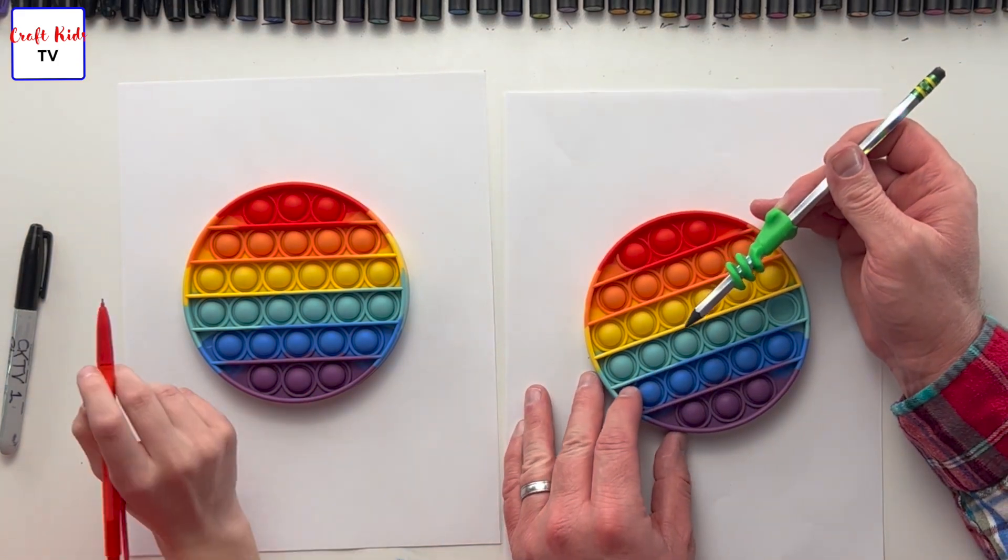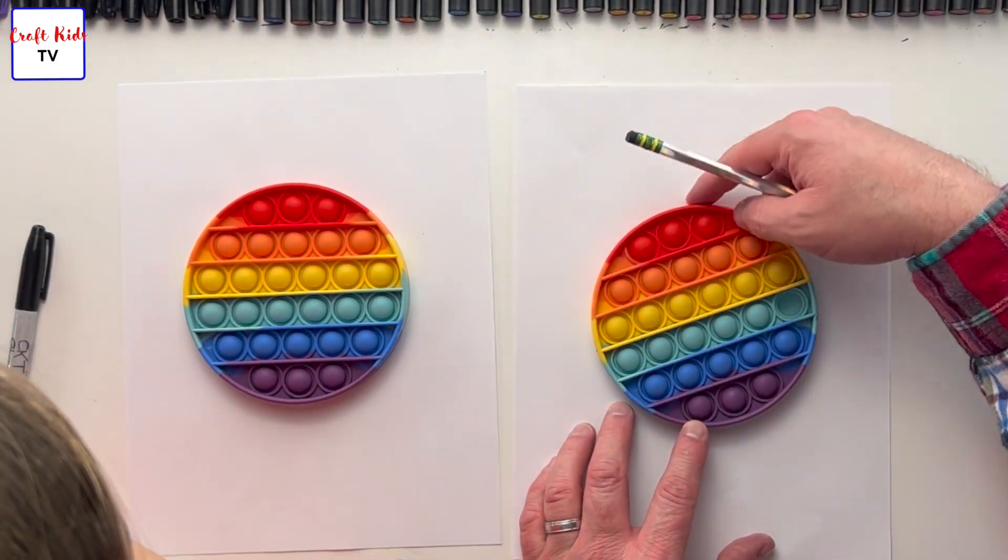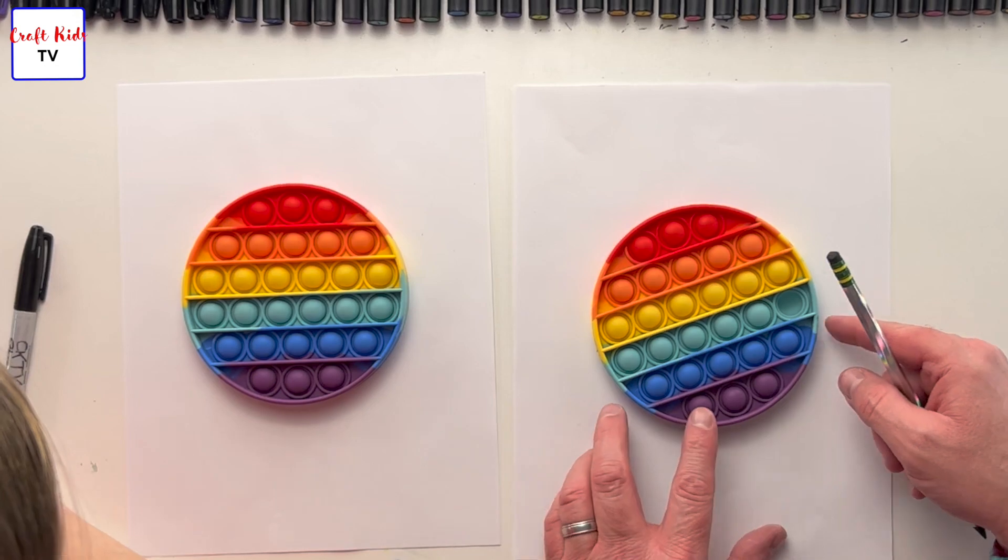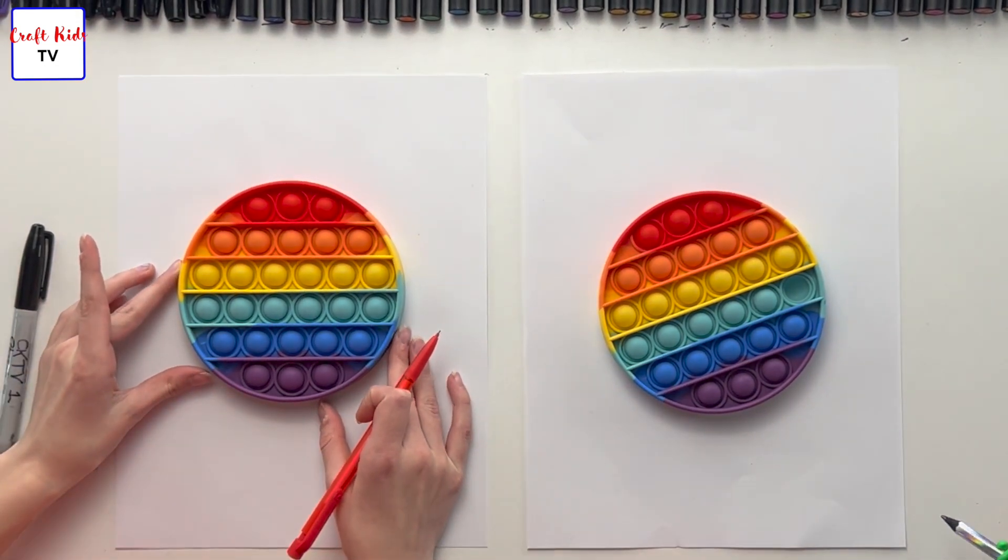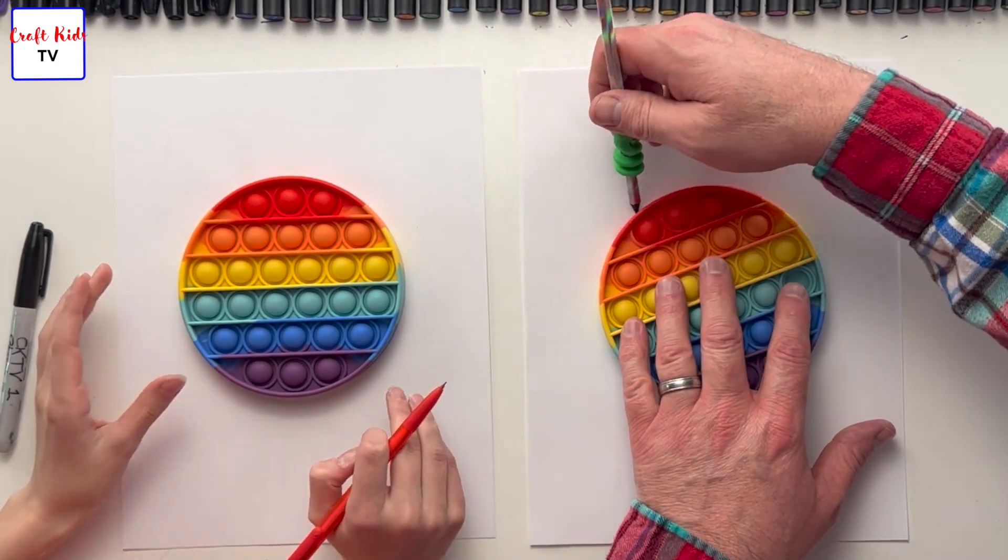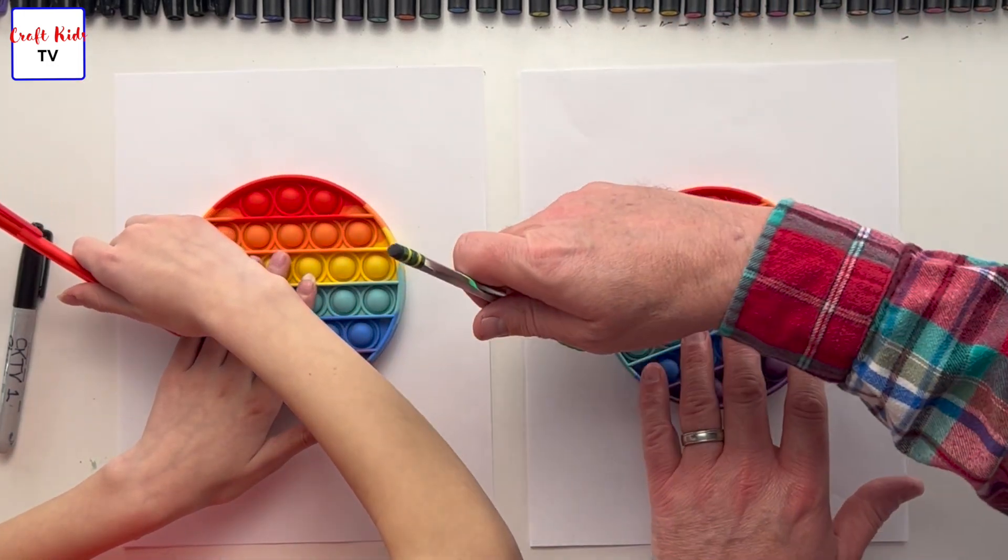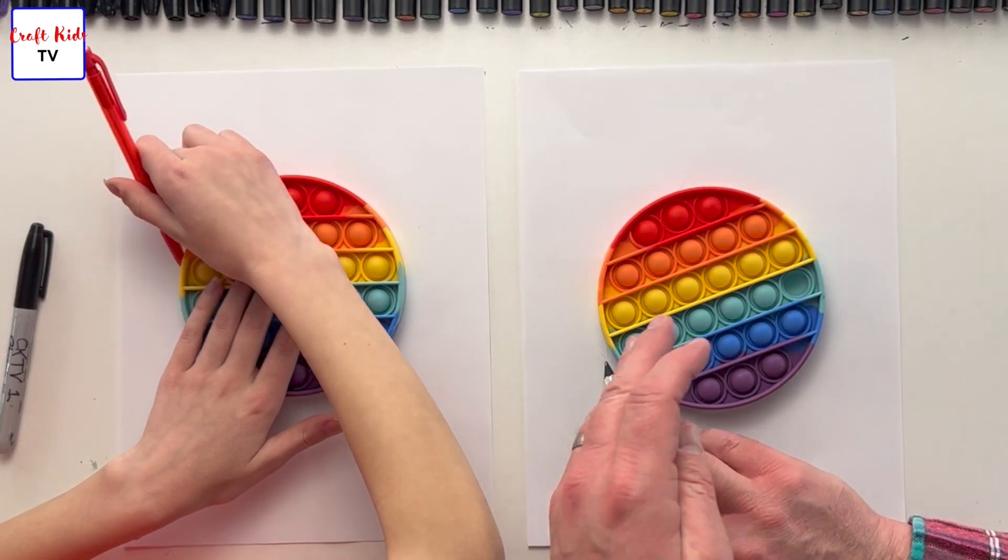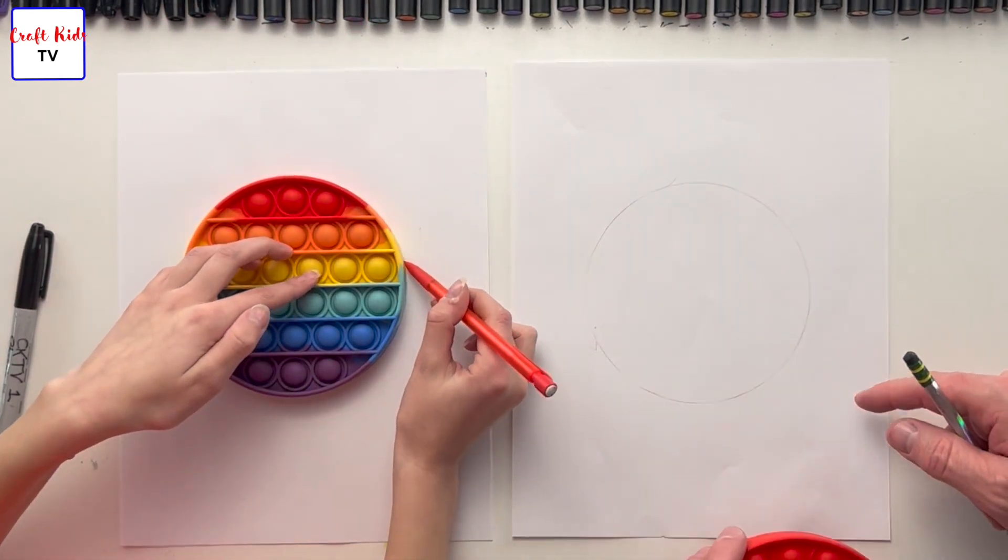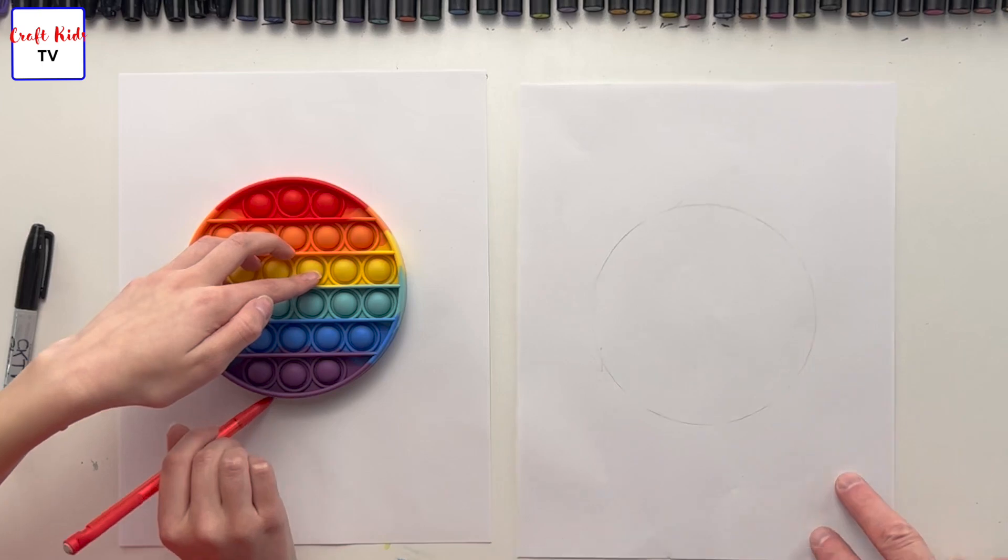We're going to put this in the middle, both from the top and bottom and the left and right, as close as we can. No need to measure, just eyeball it. And then we're just going to lightly, ever so lightly, go around it so we have a guideline. Okay, hopefully you can see that in the camera.